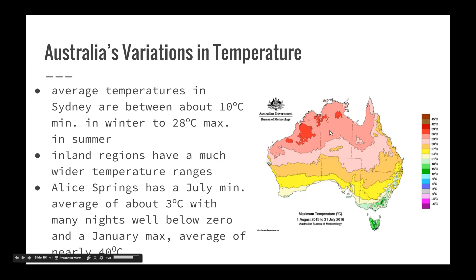The next point is to identify areas within Australia that experience significant variations in temperature and water availability. The average temperatures in Sydney are about 10 degrees minimum in winter and 28 degrees maximum in summer. Inland regions have a much wider temperature range. For example, Alice Springs in July has a minimum average of about three degrees with many nights well below zero, and a January maximum average of nearly 40 degrees. This map shows the maximum temperature over the last 12 months, showing a huge variation across Australia.